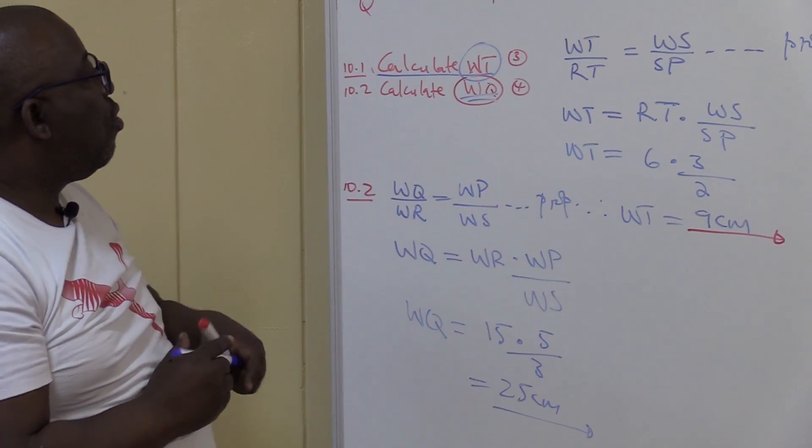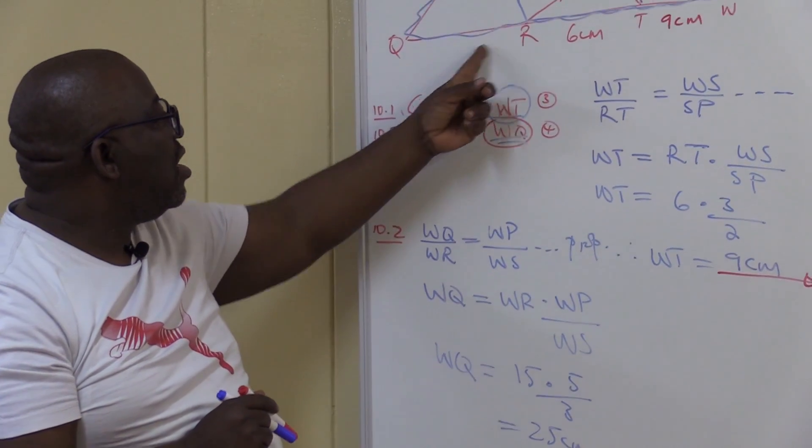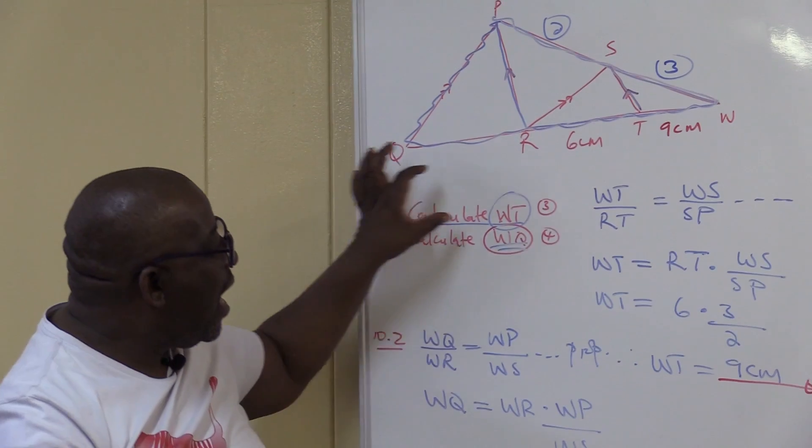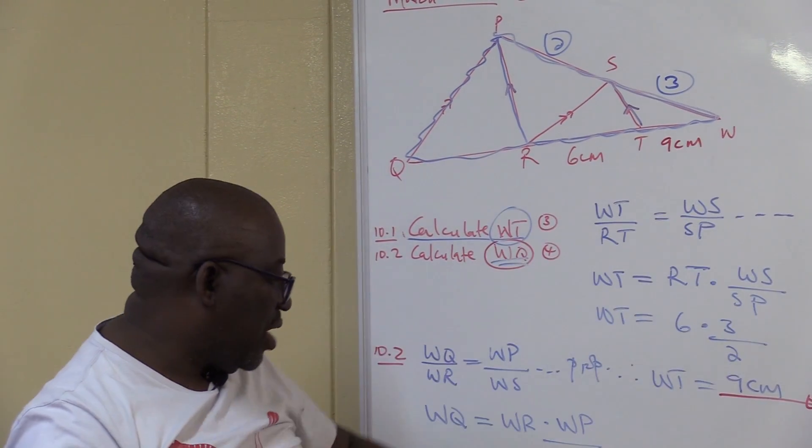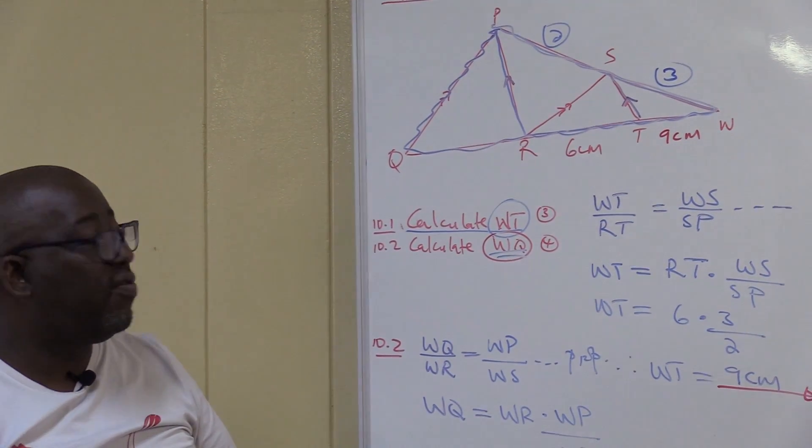There are two ways of doing this problem. I would have found this one first, which is QR, and add RW to get the same value, which is 25. Thank you.